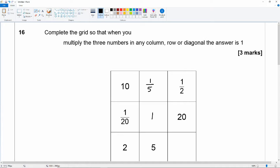2 times 5 is 10. So if I multiply by 1 tenth then that will come up to 1. So 2 times 5 is 10, 10 divided by 10 is 1.